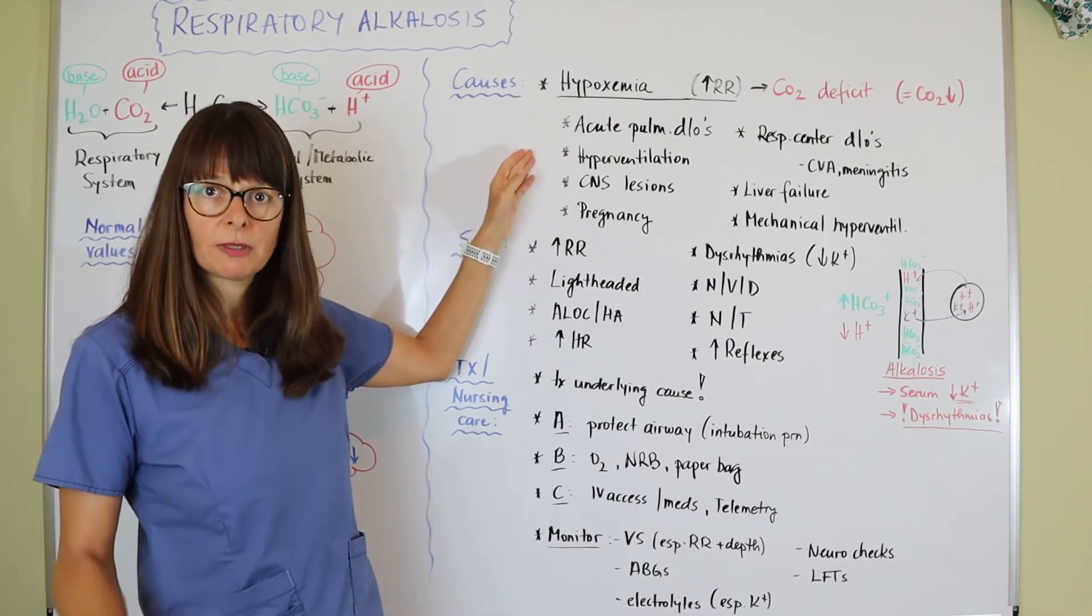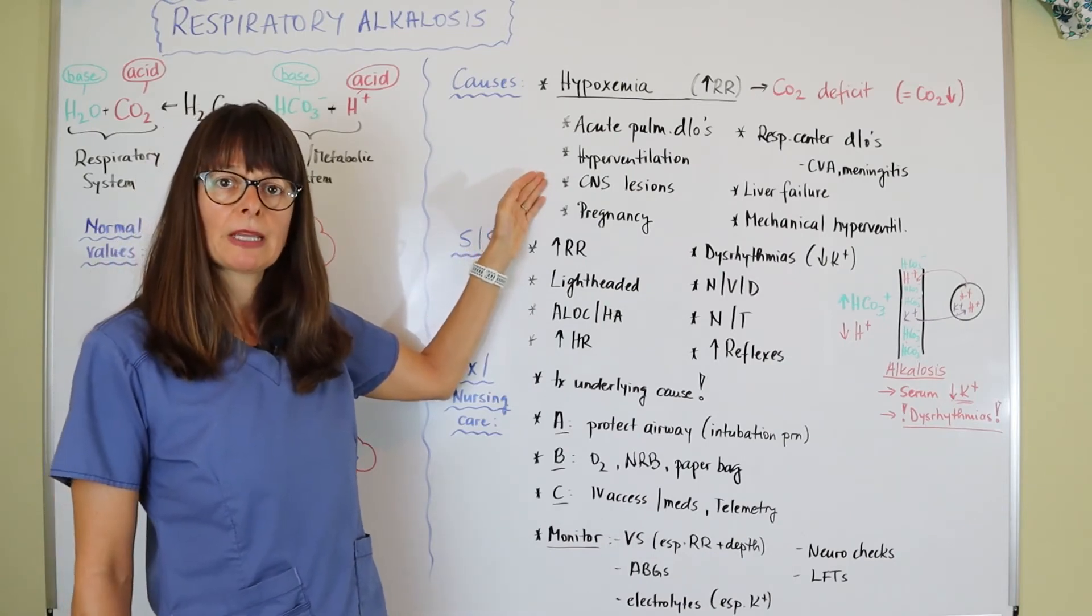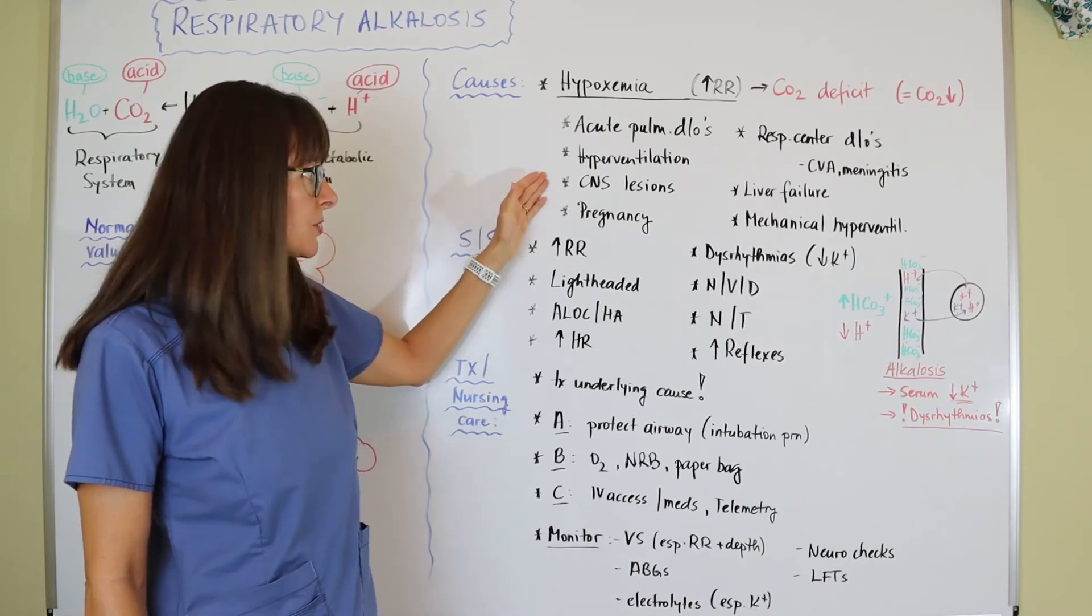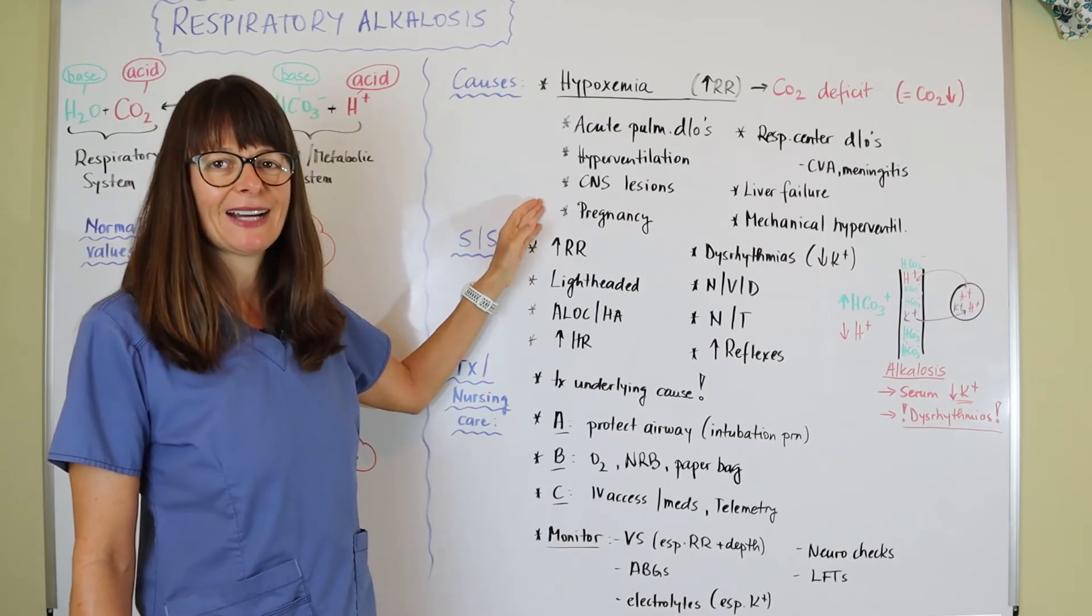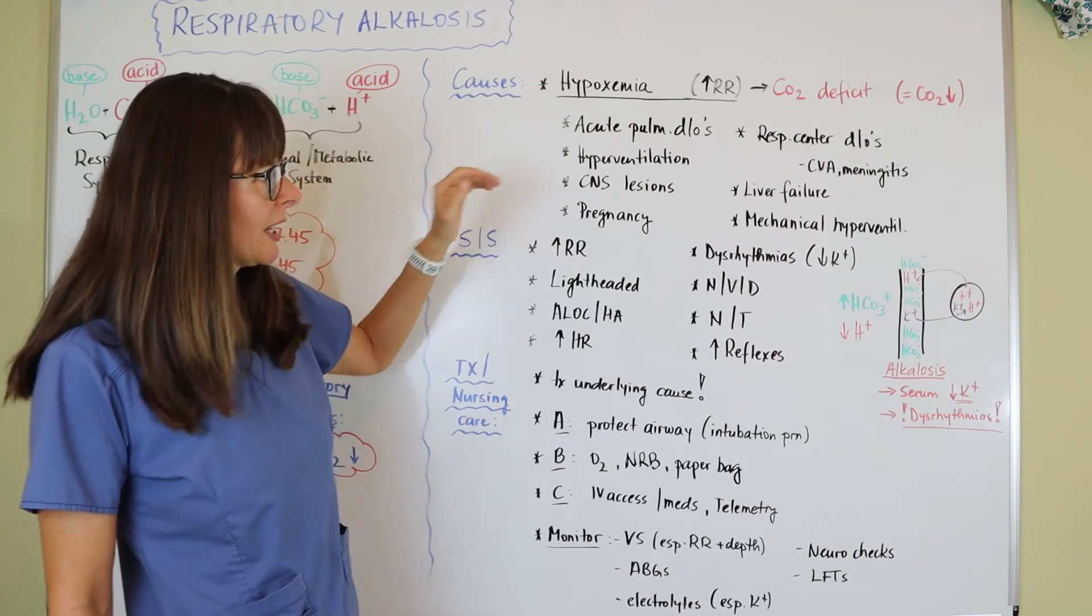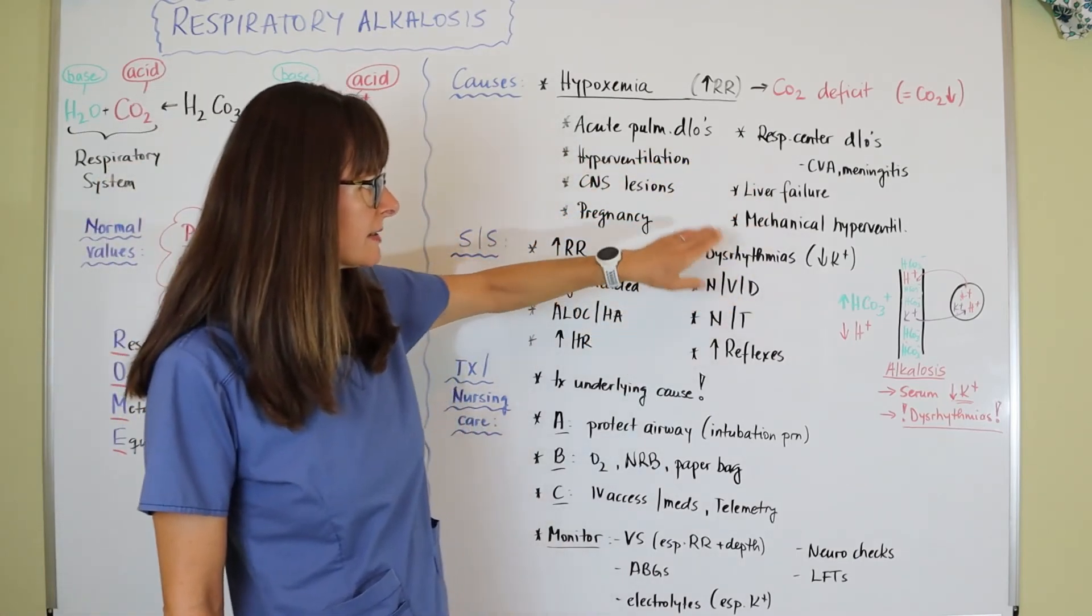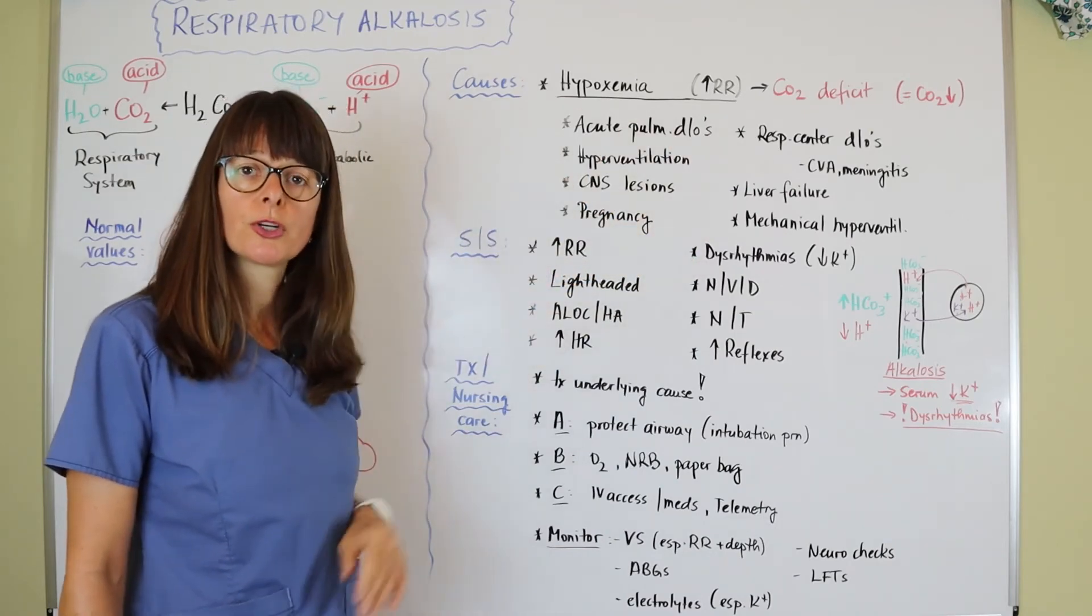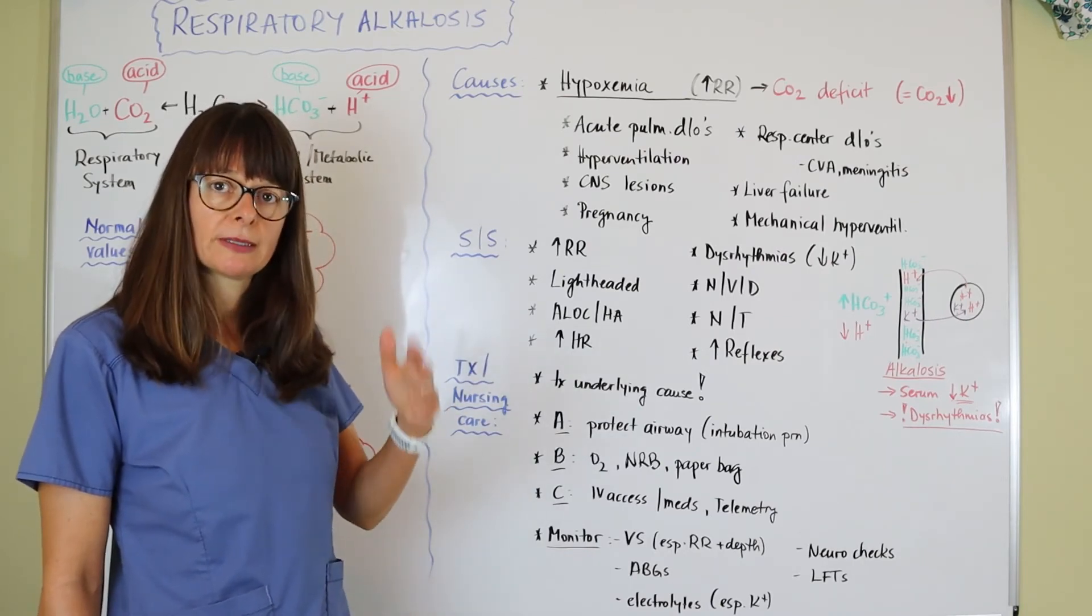If they have a fever, give antipyretics. CNS lesions are more complicated—if there's a tumor, maybe we need to remove it or decrease intracranial pressure. Pregnancy—not a lot we can do other than delivering the baby, but it depends on gestation. If there's a stroke, there's treatment for that, as well as meningitis. If the ventilator is hyperventilating the patient, we just need to reduce the respiratory rate to bring the patient's pH balance down.